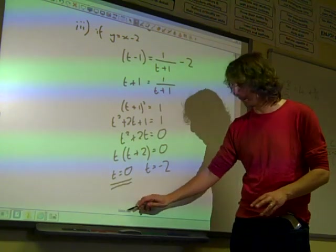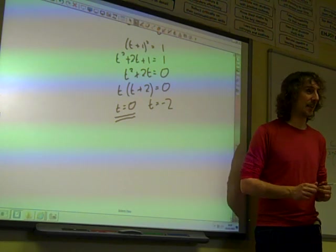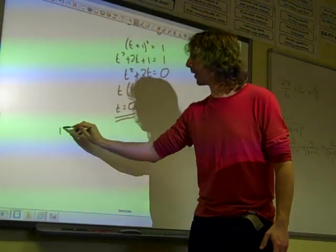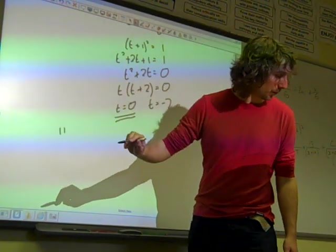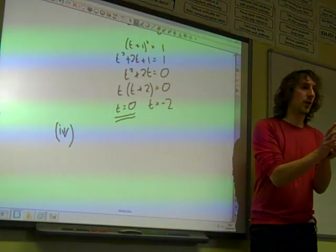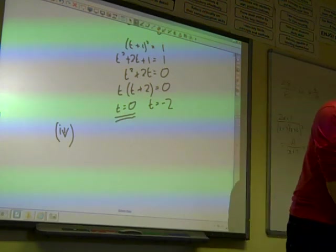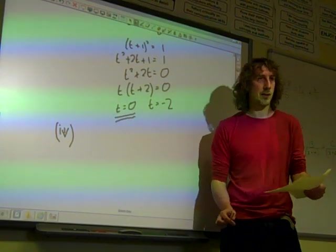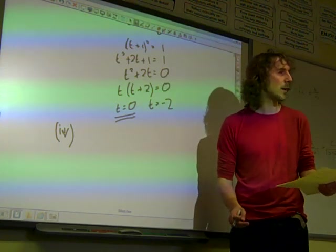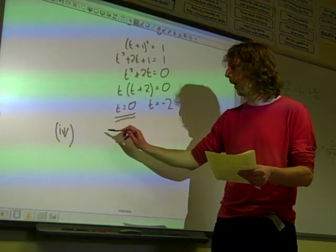Interestingly, the final three marks in this question are pretty much unconnected to anything that we've done before. But even if you've got thoroughly confused earlier on in this question, this is part 4 now. Even if you've got thoroughly confused earlier on, you can still get these three marks. Find the Cartesian equation of the curve, giving your answer in the form y equals f of x. That means we need to eliminate t from our two equations. However we choose to do that.